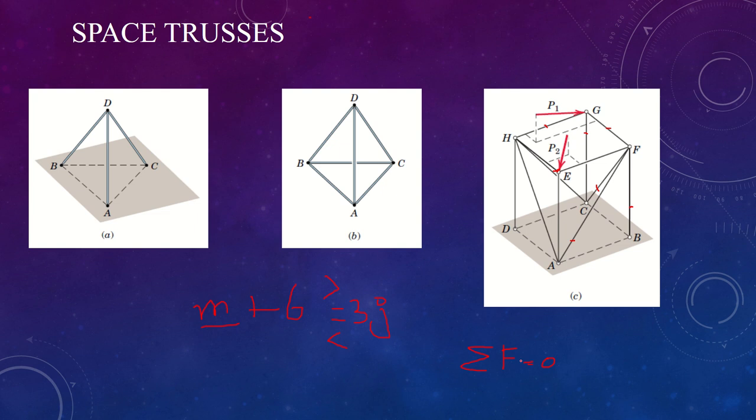An alternative procedure is to write 3J joint equations for all the joints of the space truss. The number of unknowns will be M plus 6 if the structure is non-collapsible when removed from its supports and those supports provide six external reactions. In addition, if there are no redundant members, then the number of equations—that is, 3J—equals the number of unknowns, M plus 6.